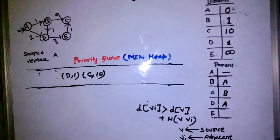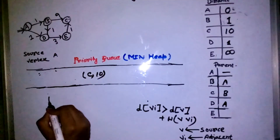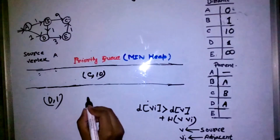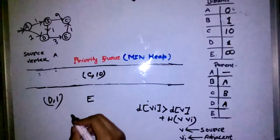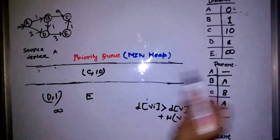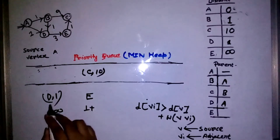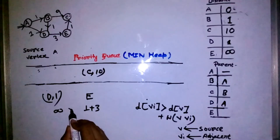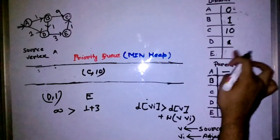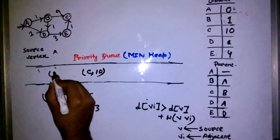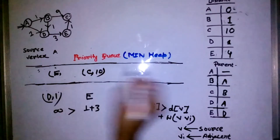The queue is not empty, so I extract the minimum again and get D with priority one. The only adjacent vertex of D is E. Distance to reach E is infinity, and distance of D is one plus weight of edge D–E which is three, giving four. Infinity is greater than four, so I update: distance of E becomes four, parent of E is D, and I enqueue E with priority four.